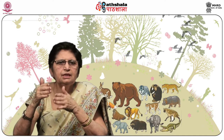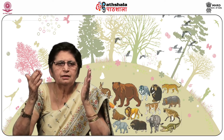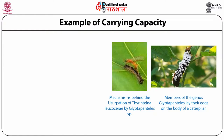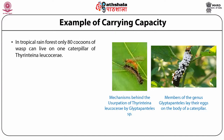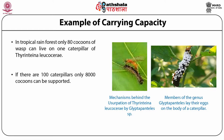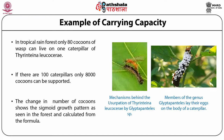The carrying capacity does not remain constant over time. For example, birds feeding on seasonal crops show seasonal variations in growth patterns. For human populations, technology plays an important role in carrying capacity dynamics — each Neolithic revolution increased the world's carrying capacity through the invention of agriculture. As a concrete example, in the tropical rainforest, only 80 cocoons of wasps can live on one caterpillar of Thyrethina leucocyrae; if there are 100 caterpillars, only 8000 cocoons can be supported. The change in the number of cocoons shows a sigmoid growth pattern as calculated from the formula.